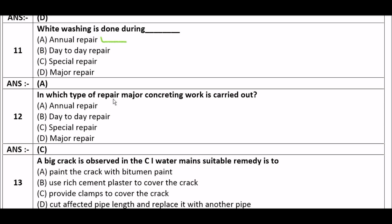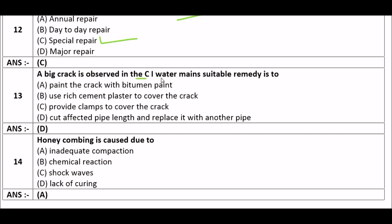Next question: In which type of repair is major concreting work carried out? Option A: annual repair, option B: day-to-day repair, option C: special repair, option D: major repair. The right answer is option C, special repair. In special repair, major concreting work is carried out.